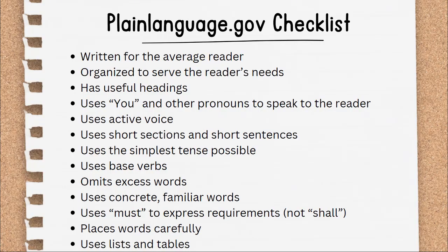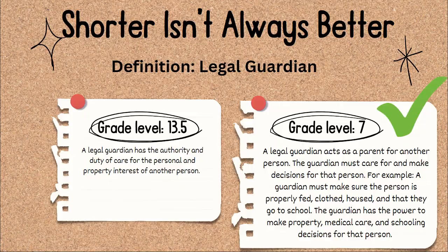Plainlanguage.gov is a U.S. government website with information about plain language training, examples, and guidelines, including a handy checklist to get you started. It's important to remember that shorter isn't always better. Sometimes you need extra text to get the point across. For example, a shorter definition of 'legal guardian' at a grade 13.5 reading level states 'a legal guardian has the authority and duty of care for the personal and property interests of another person.' However, the better plain language version at a grade 7 reading level explains that a legal guardian acts as a parent for another person — the guardian must care for and make decisions for that person, including ensuring they are properly fed, clothed, and housed, and making property, medical care, and schooling decisions.